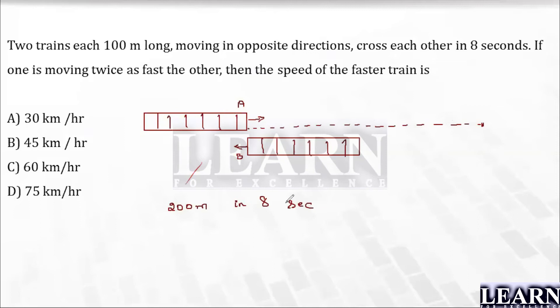This is the combined one: 200 meters in 8 seconds. What is the combined speed here? I can say it is 25 meters per second. This speed is nothing but the relative speed here. Relative speed is 200 divided by 8, which is 25 meters per second.